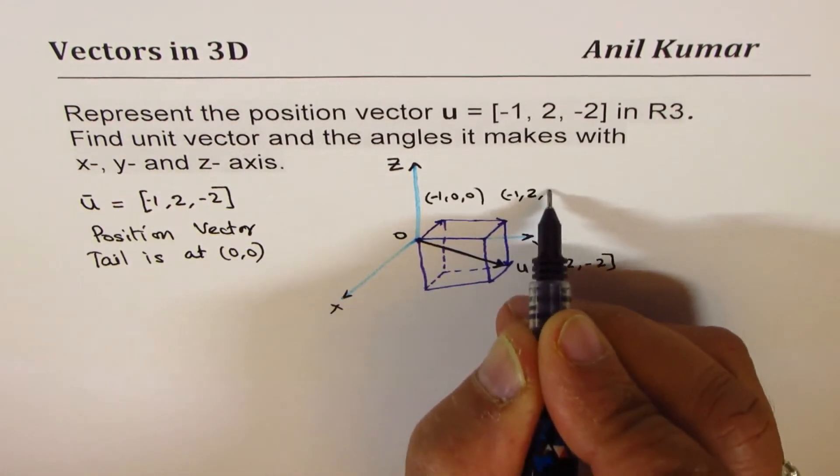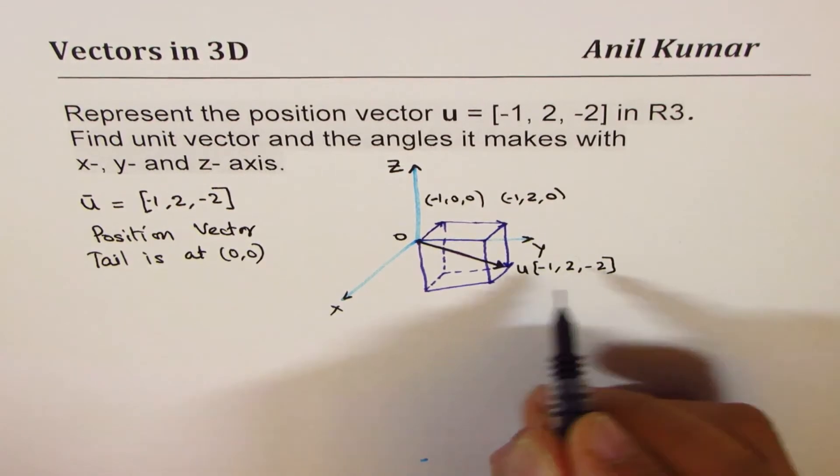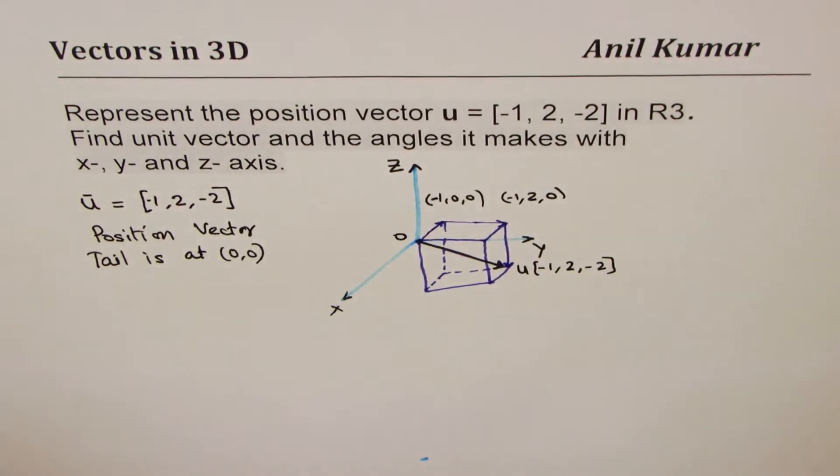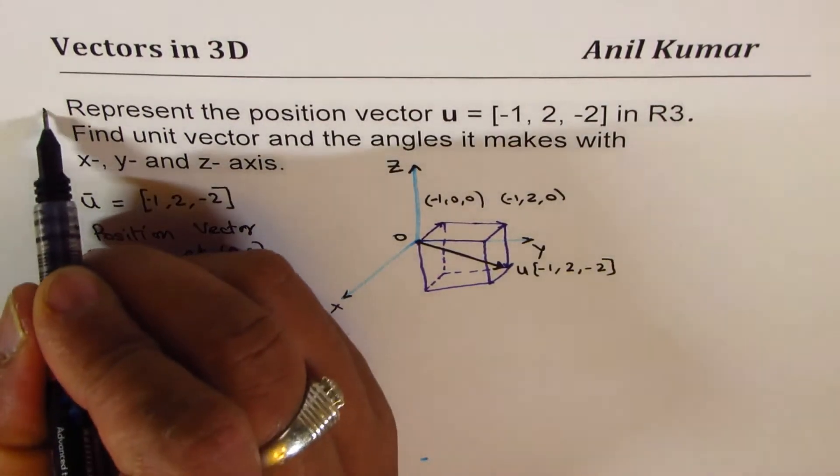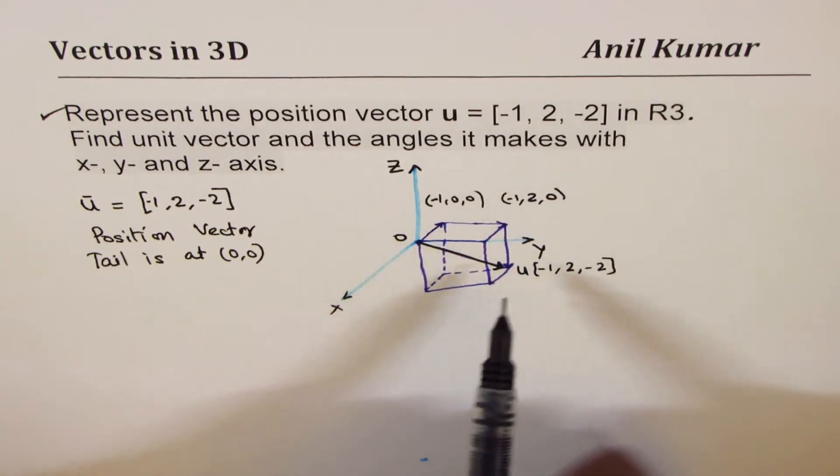This will be -1. Then you move 2 along y, 0 along z, and this is (-1, 2, -2). Likewise, you could put all other points also. So, we have done the first part, which is representing position vector in R3.